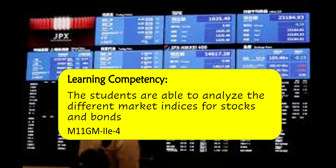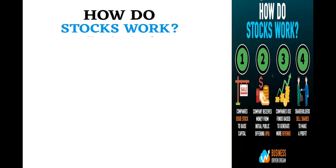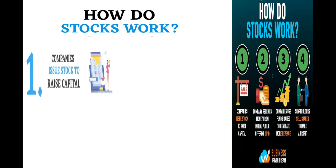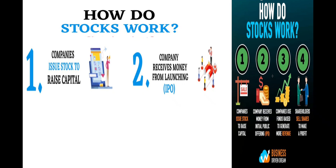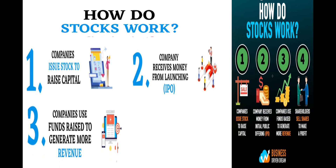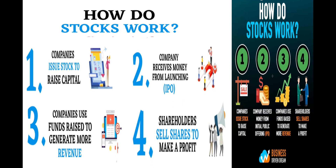In our previous lesson, we discussed stocks and bonds and how to be a stockholder and bondholder by buying a share in a certain company. So now, how do stocks work? First, companies issue stock to raise capital. Second, the company receives money from launching an IPO. Then, companies use the fundraise to generate more revenue. And the last one is shareholders sell shares to make a profit.